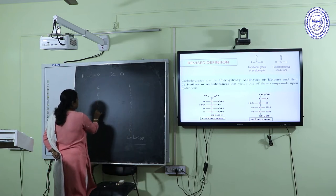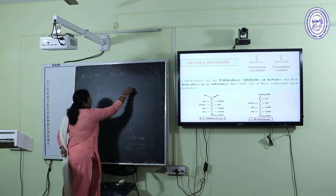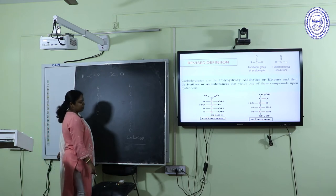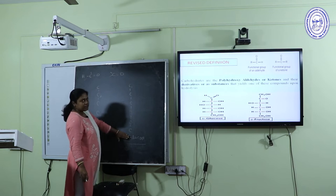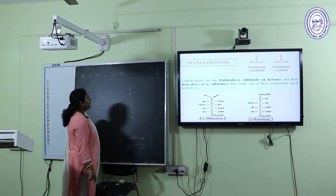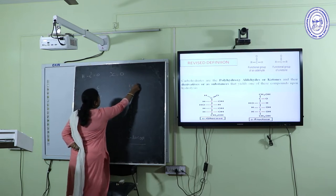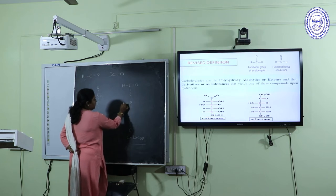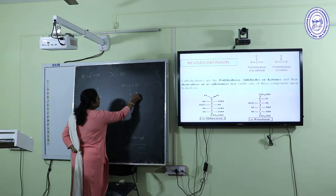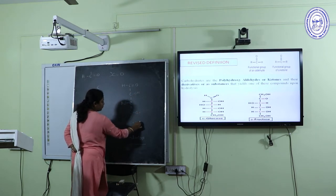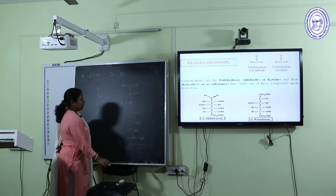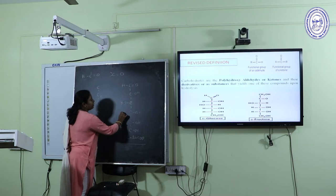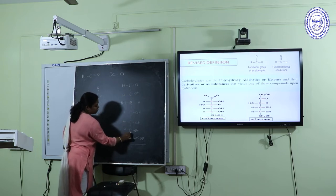Always remember: in aldose sugar, the aldehyde group is always at the C1 position, and in keto sugar, the ketone group is present at the C2 position. To write the structure of glucose, first write the 6 carbons, since it is a hexose sugar containing 6 carbon atoms. At the first carbon, write the aldehyde group as the functional group. At the third carbon on the left side, add a hydroxyl group. On the rest of the carbons on the right side, add hydroxyl groups. Then fulfill the four valencies of carbon with hydrogen atoms. This is the basic open ring structure of glucose.